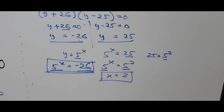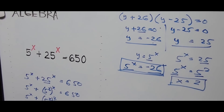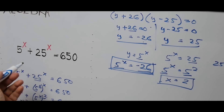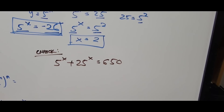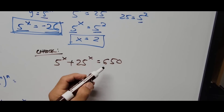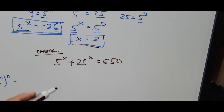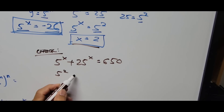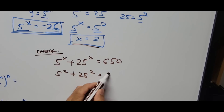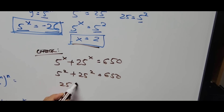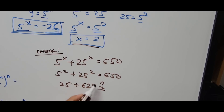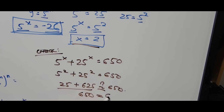Now let's verify by substituting x equals 2 into the original equation: 5 raised to x plus 25 raised to x equals 650. With x equals 2, we get 5 squared plus 25 squared, which is 25 plus 625, and 25 plus 625 equals 650. That equals exactly 650, confirming that x equals 2 is the correct answer.